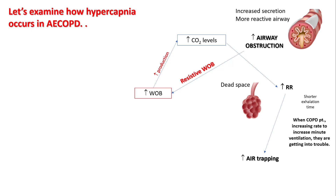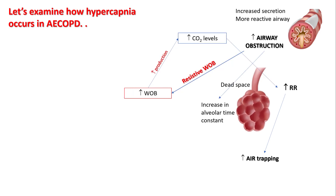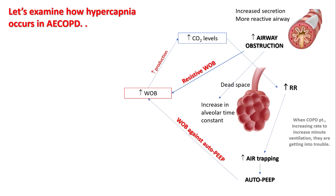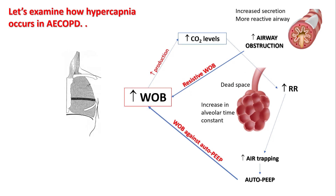Increased rate results in shorter exhalation time and more air trapping. The alveolar time constant was already high to begin with — now that becomes even worse. Air trapping results in auto-PEEP, and now the person has to work against the auto-PEEP, further increasing their work of breathing.